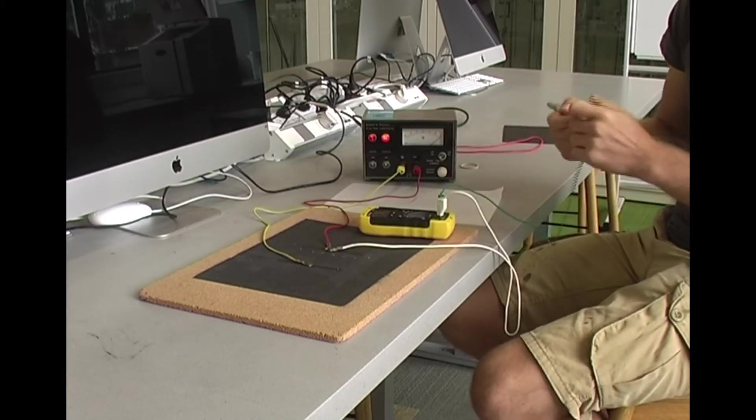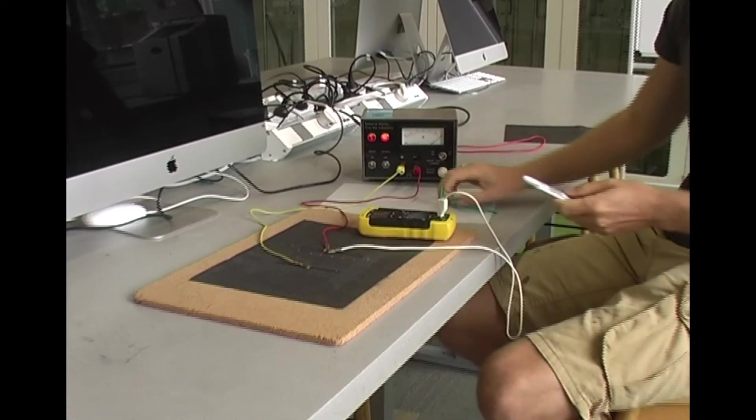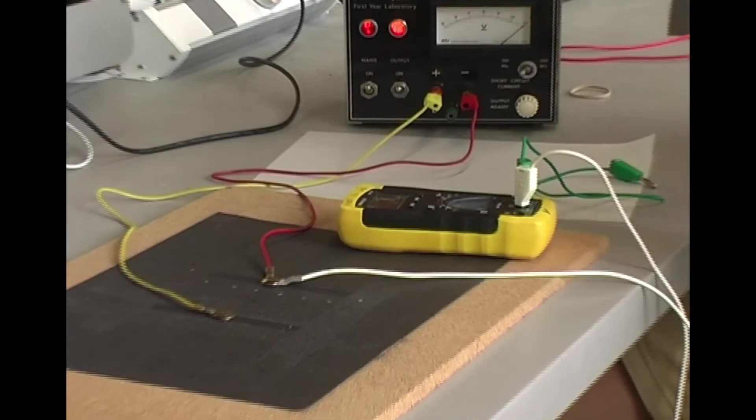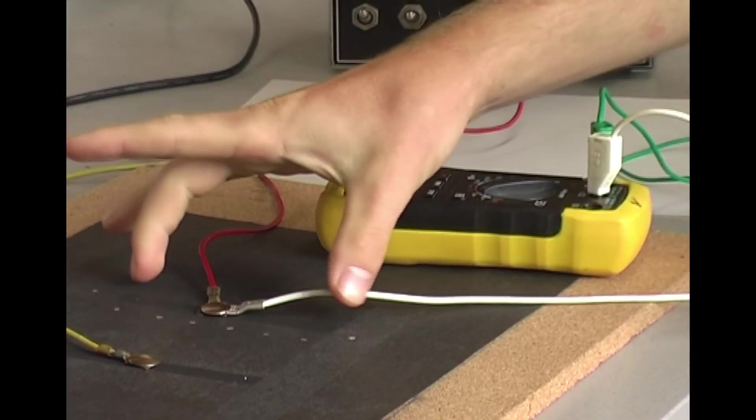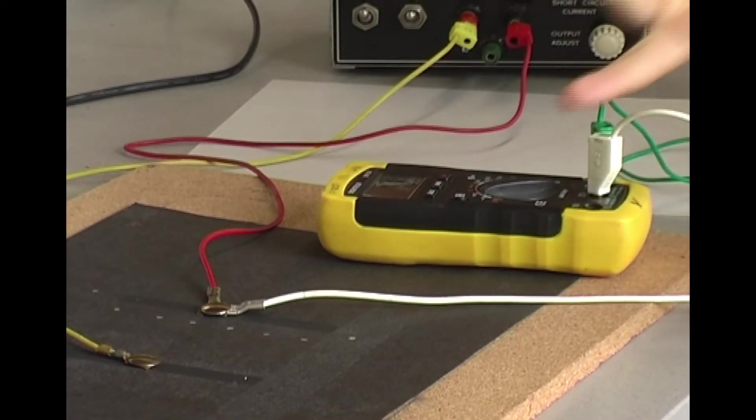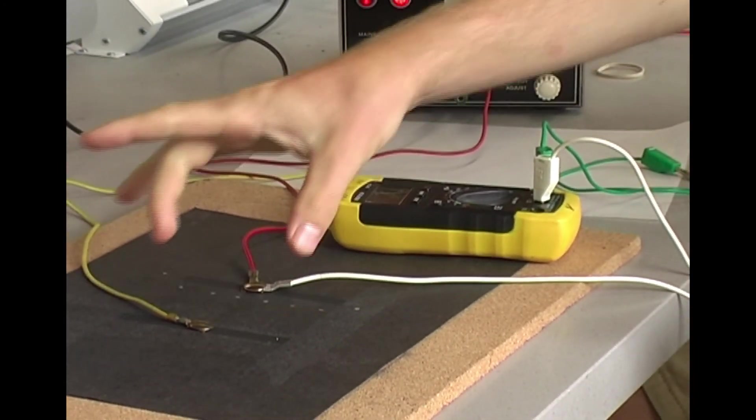So once you're done for the 2 volt line, it should look something like this. You want to make sure that your points are evenly spaced and you've got at least one either side of your actual plates to see what the field looks like outside of this central region.